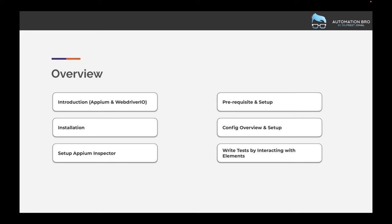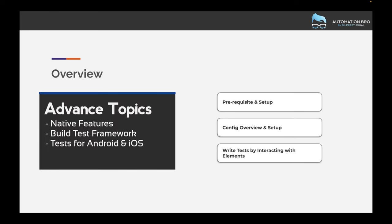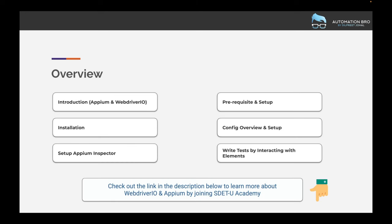If you are looking to learn more advanced topics — such as how to work with native features, how to build a test framework you can implement right away in your organization, and how to do this for both Android and iOS — then you can check out the link in the description below to get access to the SDQ Academy, where you can learn more about WebdriverIO as well as mobile automation with Appium. I hope you guys are excited — let's get started.